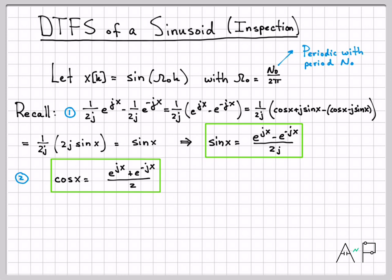So what we're going to do in this problem is we're going to take sine, and we're going to rewrite it using this identity right here. And then look what happens, we'll very easily be able to write x of k as a weighted combination of complex exponentials. Well, that's exactly what the DTFS is all about: writing a periodic discrete time signal as a weighted combination of complex exponentials.